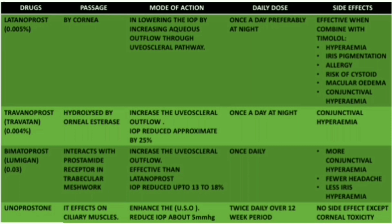Travoprost's side effect is conjunctival hyperemia. The third drug is bimatoprost, also known as Lumigan, used at 0.03% concentration. It interacts with the prostamide receptor in the trabecular meshwork to work as an anti-glaucomatous drug. It increases uveoscleral outflow and is more effective than latanoprost, reducing IOP by up to 13–18%.